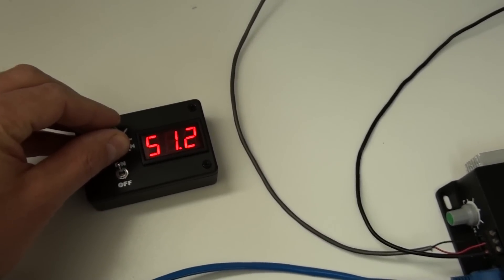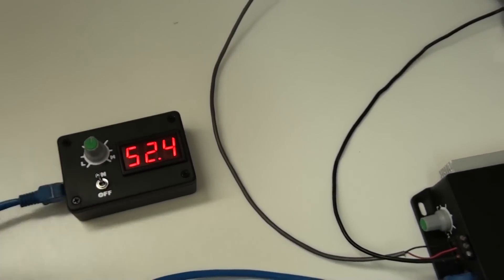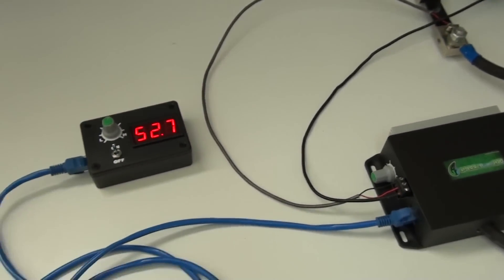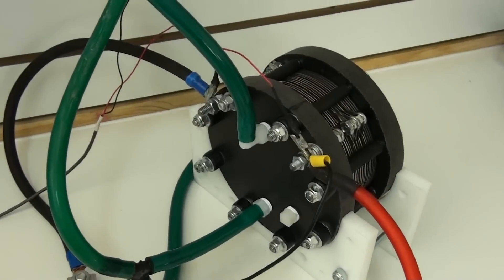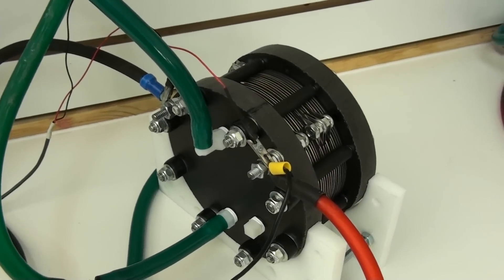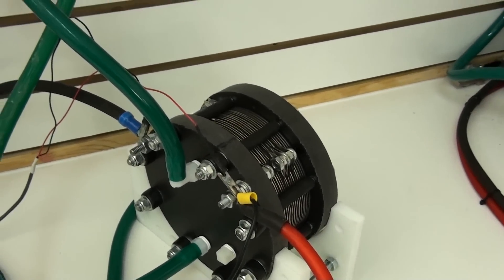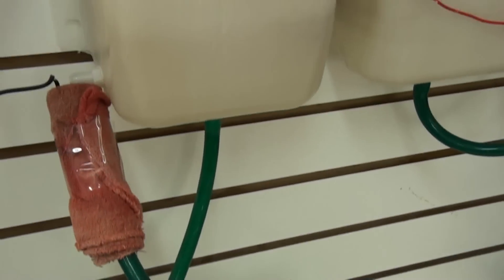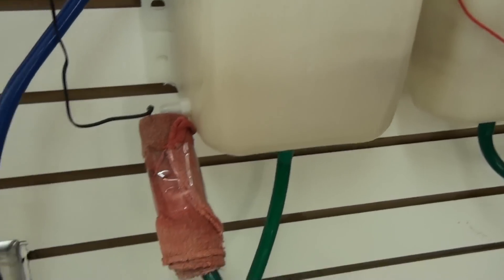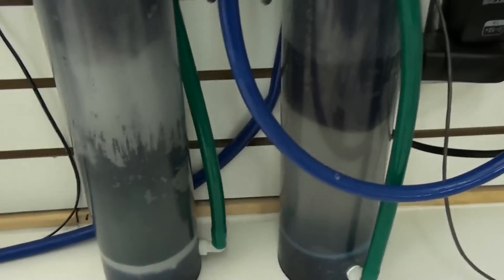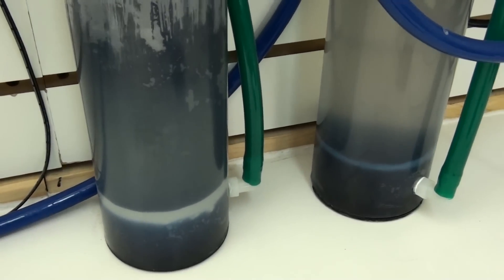Let's turn this up a little bit so you can see how it runs over 50 amps. The cell I've got it hooked to is pretty small. It's a little 6 inch cell, 20 plate. See the output there.